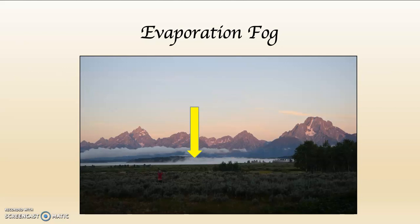If you look at this picture, you can see in the background — this is the Teton Range in Wyoming, 14,000 feet high in some places. Where the arrow is pointing is an evaporation fog that's formed over the top of Jackson Lake. You can tell this is in the morning. The tops of the mountains are illuminated, but the bottom has not been illuminated yet because the sun has not gotten completely above the horizon. At night, cold air came down the sides of the mountains and settled over the top of that significantly warmer body of water, which is Jackson Lake.